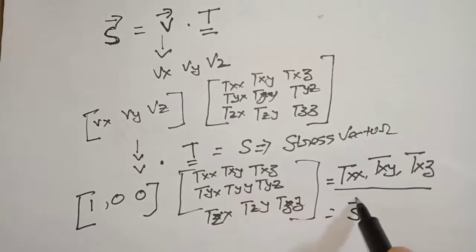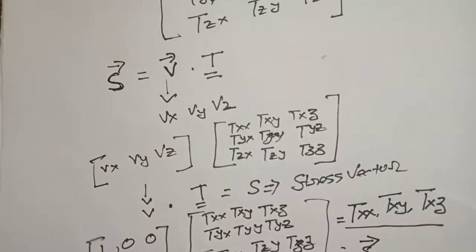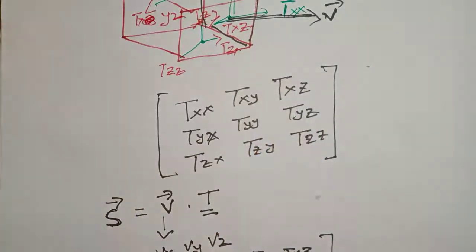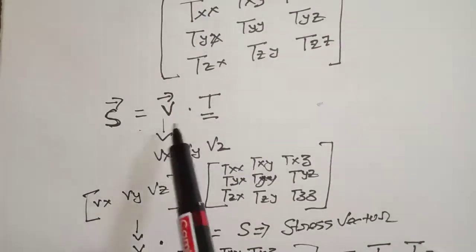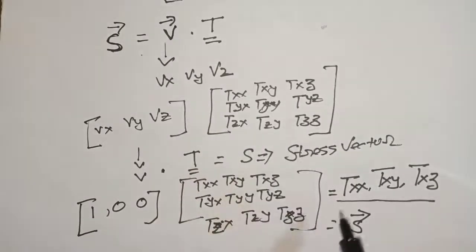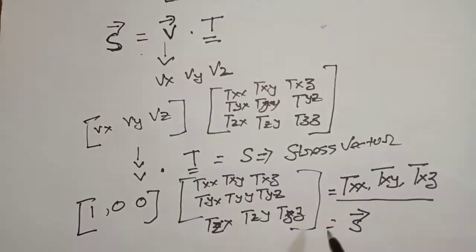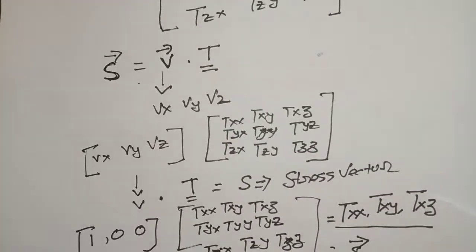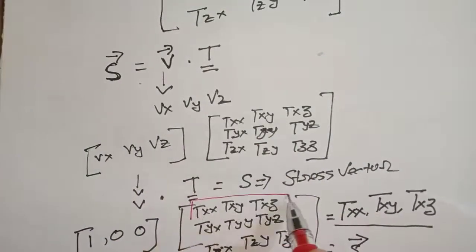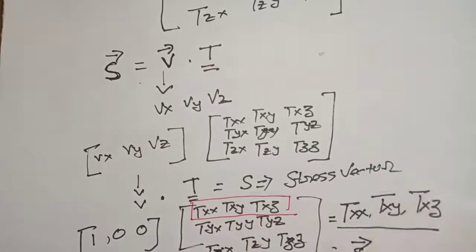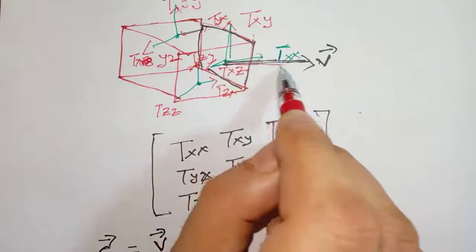The result T_xx, T_xy, T_xz equals the stress vector. This is quite straightforward. So we have the plane vector v, we take the dot product s = v · T, with v = [1, 0, 0] multiplied by the stress tensor, yielding the vector [T_x, T_y, T_z], which leads to s, the stress vector. I will mark in red: T_xx, T_xy, and T_xz.